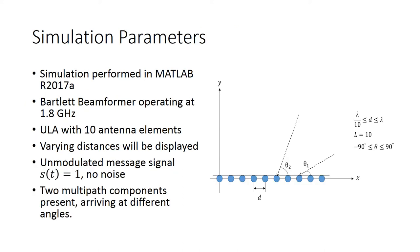The ULA in this simulation utilizes 10 antenna elements with close arrival angles of 45 and 60 degrees and far angles of 21 and 70 degrees. One-half, one-third, and one-sixth of a wavelength are utilized for inter-element spacing. A graphical representation of this ULA can be seen in the figure to the right.